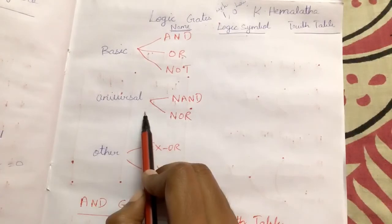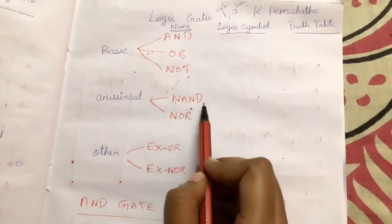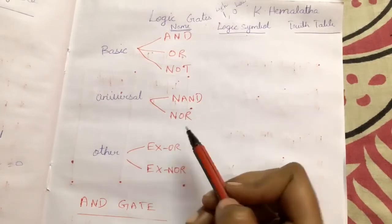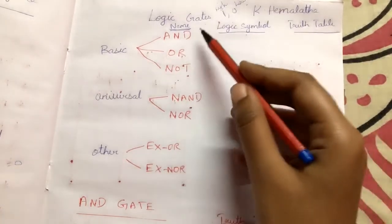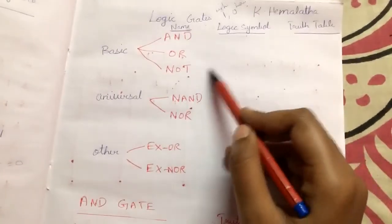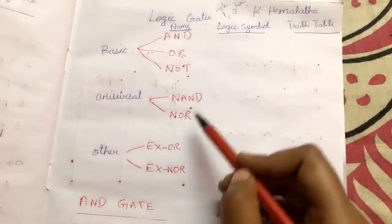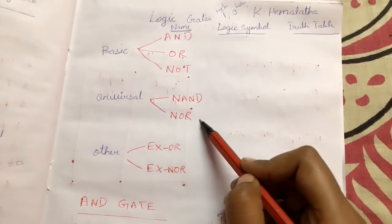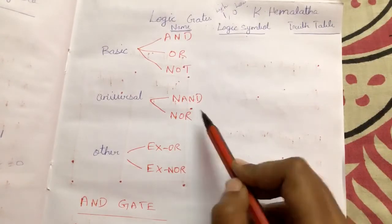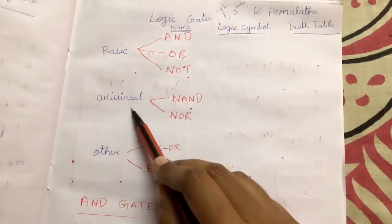First, the universal gate. Why are NAND gate and NOR gate called universal gates? Because NAND gate and NOR gate can represent all other gates — AND gate, OR gate, NOR gate, EXOR gate, and XNOR gate. All these gates can be represented by NAND gate and NOR gate. That is why these two gates are called universal gates.